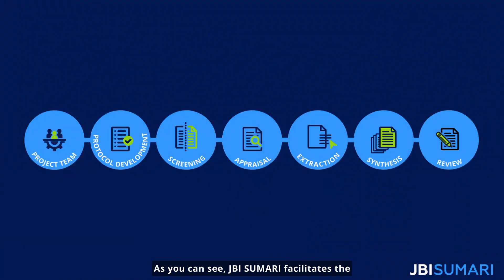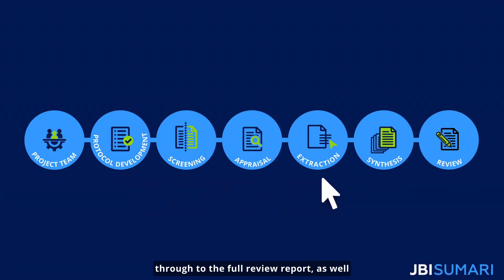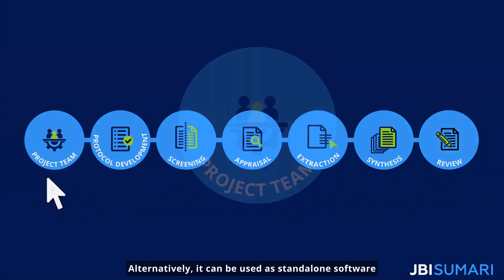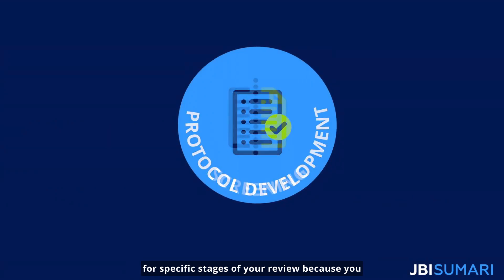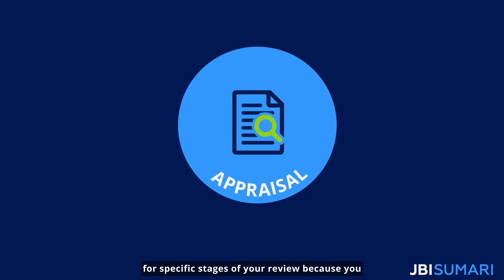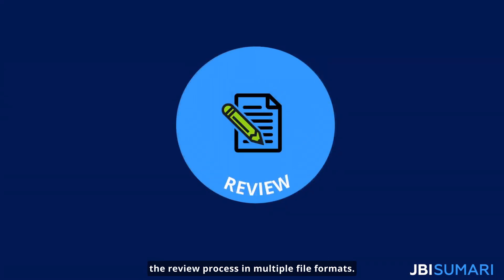As you can see, JBI Summary facilitates the entire systematic review process from protocol development right through to the full review report, as well as including team and contributor management facilities. Alternatively, it can be used as standalone software for specific stages of your review, because you can export your data at any stage of the review process in multiple file formats.